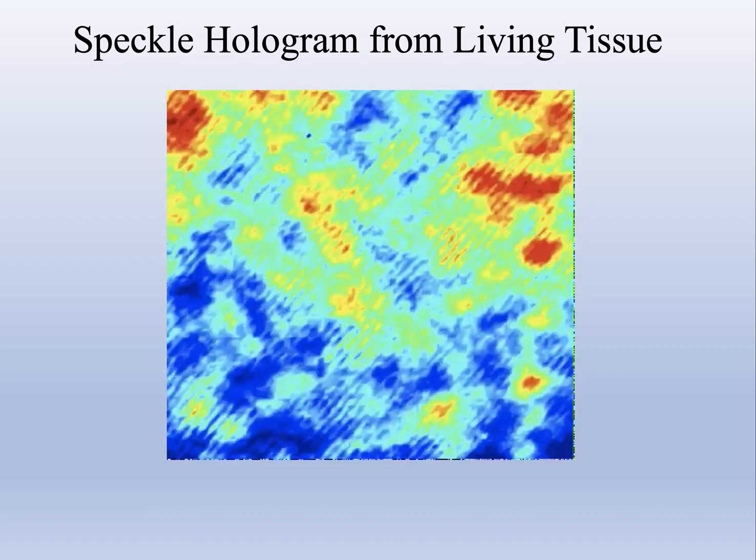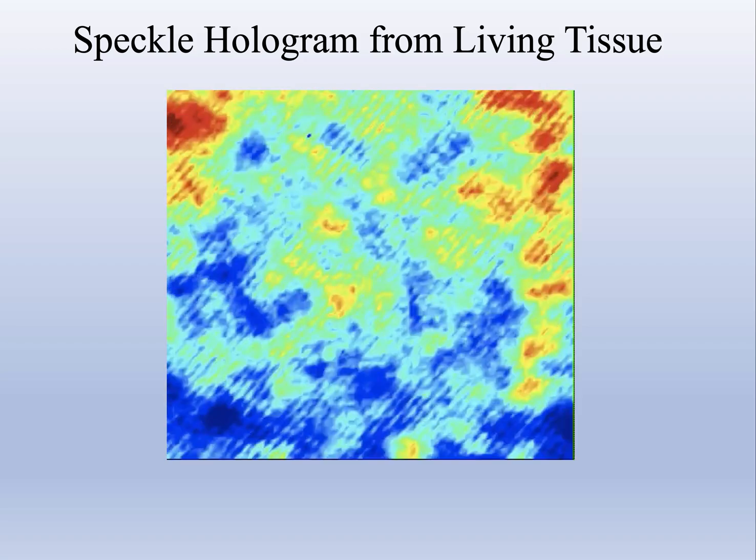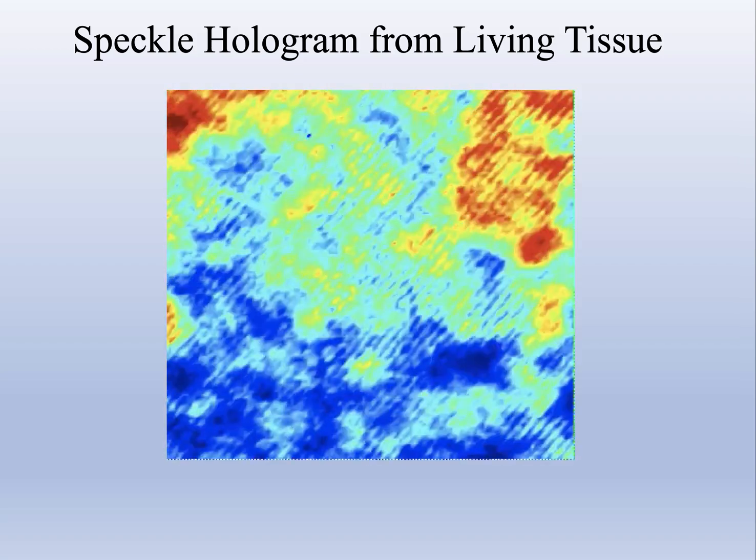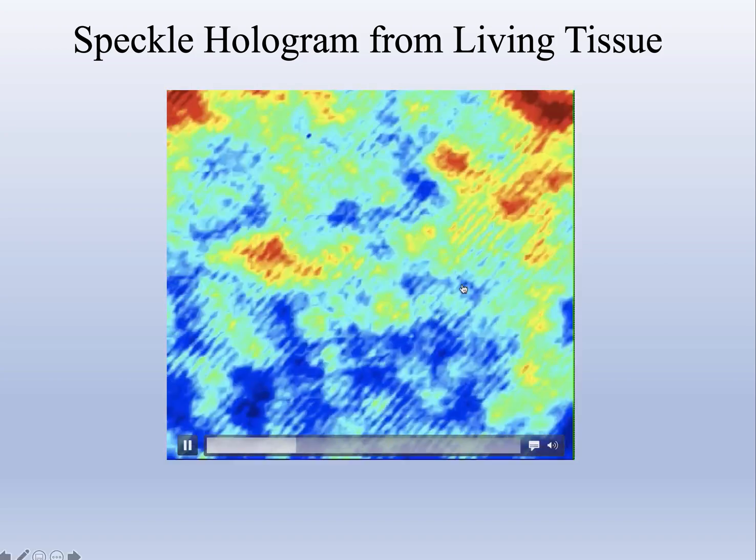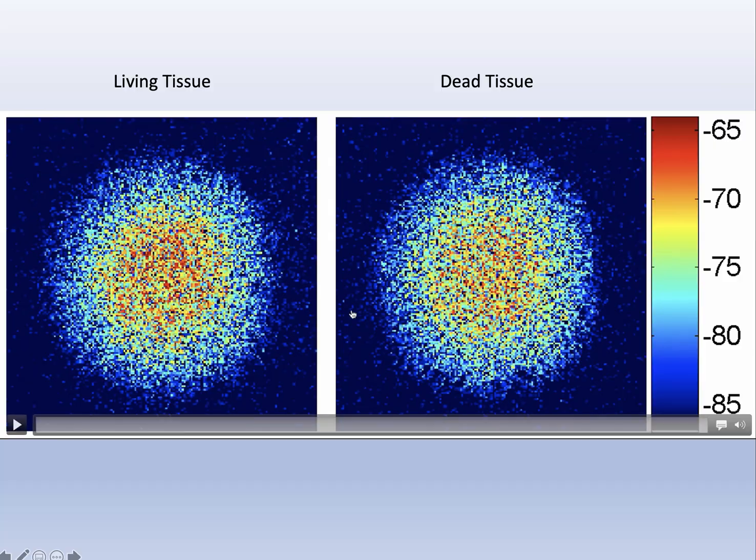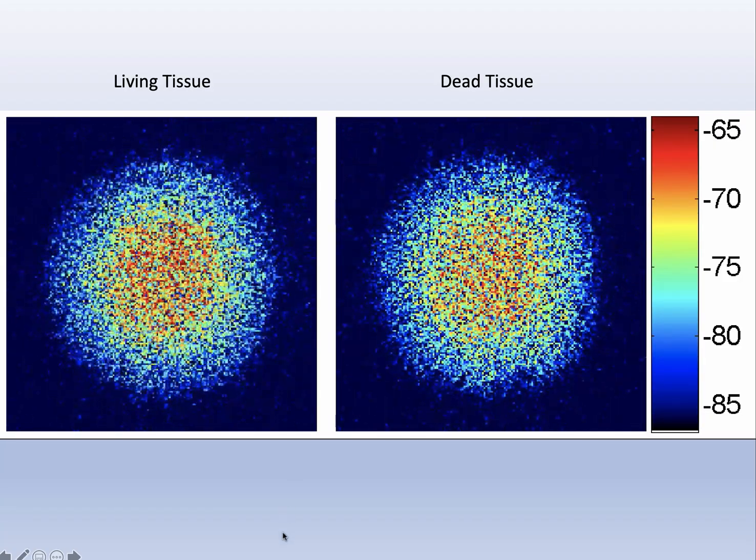All this dynamic motion is actually caused by all the motions going on inside of living tissue. Everything's in motion - the mitochondria moving, the nucleus is moving, the cells are moving around. As they scatter light, they produce this snow, but there's a lot of information in here.